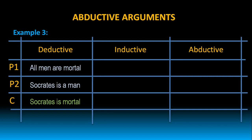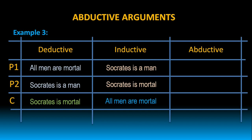Now let us observe inductive arguments. Socrates is a man. Socrates is mortal. Therefore, all men are mortal. In this inductive argument, the conclusion cannot be logically inferred from the given two premises. That is why in inductive arguments, the conclusion may be true or may not be true. When we observe the reasoning process, it moves from specific case to general case. Premise 1 and premise 2 are talking about Socrates, which is a specific case, but the conclusion — all men are mortal — is a general case.